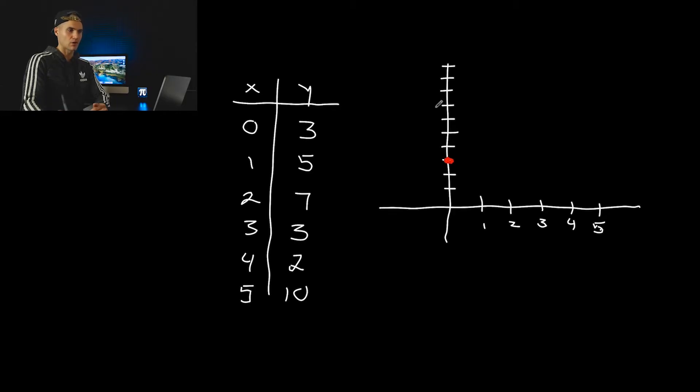Let's pretend that our y-axis here is going up by ones. And then I got one and five, that's going to be here. Two and seven, that's going to be here. Three and three, that's right here. Four and two, and then five and ten, that's going to be all the way up here.